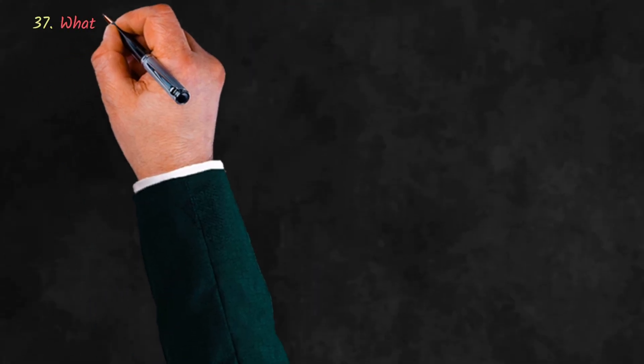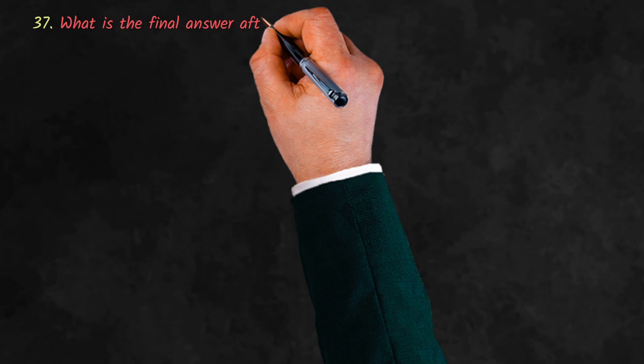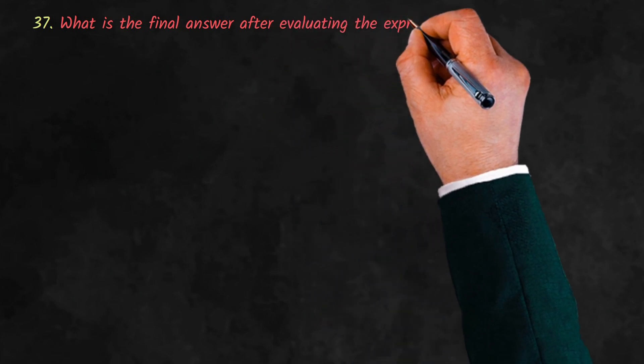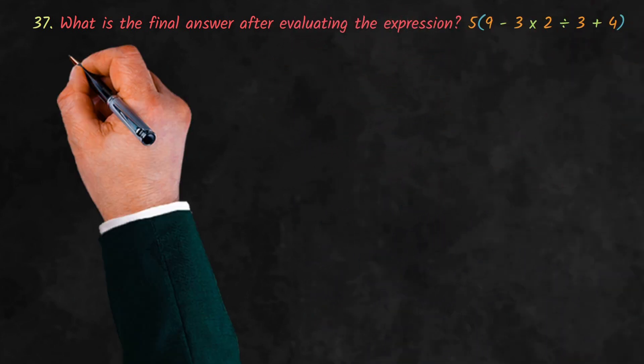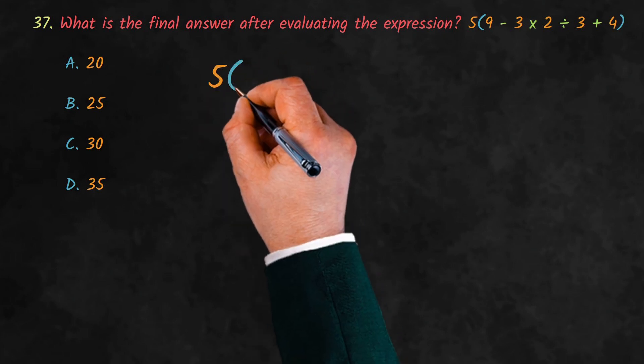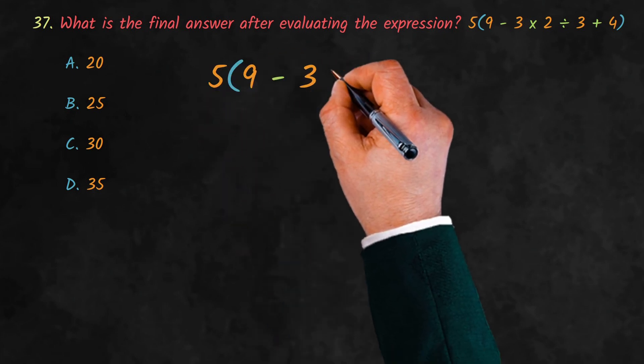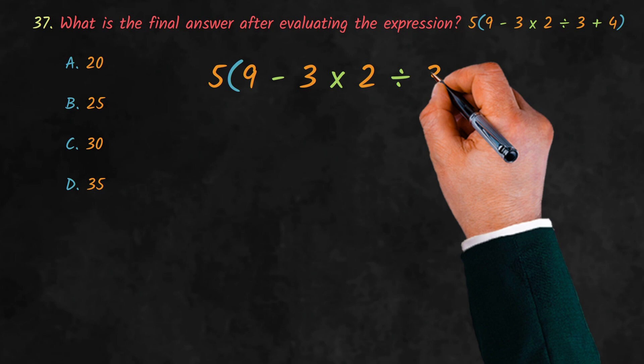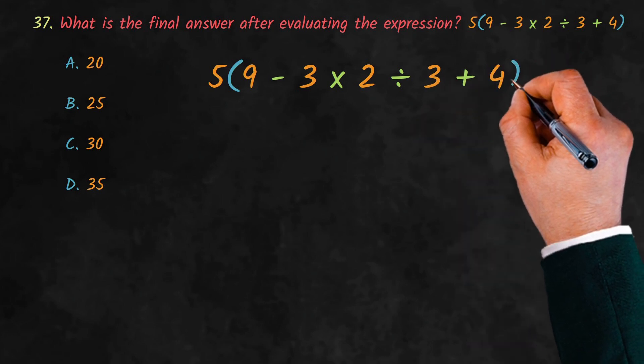Now, you can try solving this question and post your answer with steps in the comments below. What is the final answer after evaluating the expression? 5(9 - 3 × 2 ÷ 3 + 4).